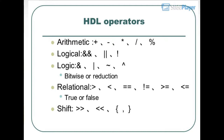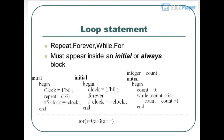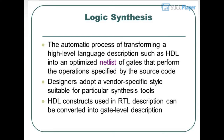HDL operators include: arithmetic (%), logical (: and |), bitwise or reduction, relational (>, ==, >=, <=), true or false, shift, and loop statements — Repeat, Forever, While. These must appear inside an initial or always block. Logic Synthesis is the automatic process of transforming a high-level language description such as HDL into an optimized netlist of gates that performs the operations specified by the source code.